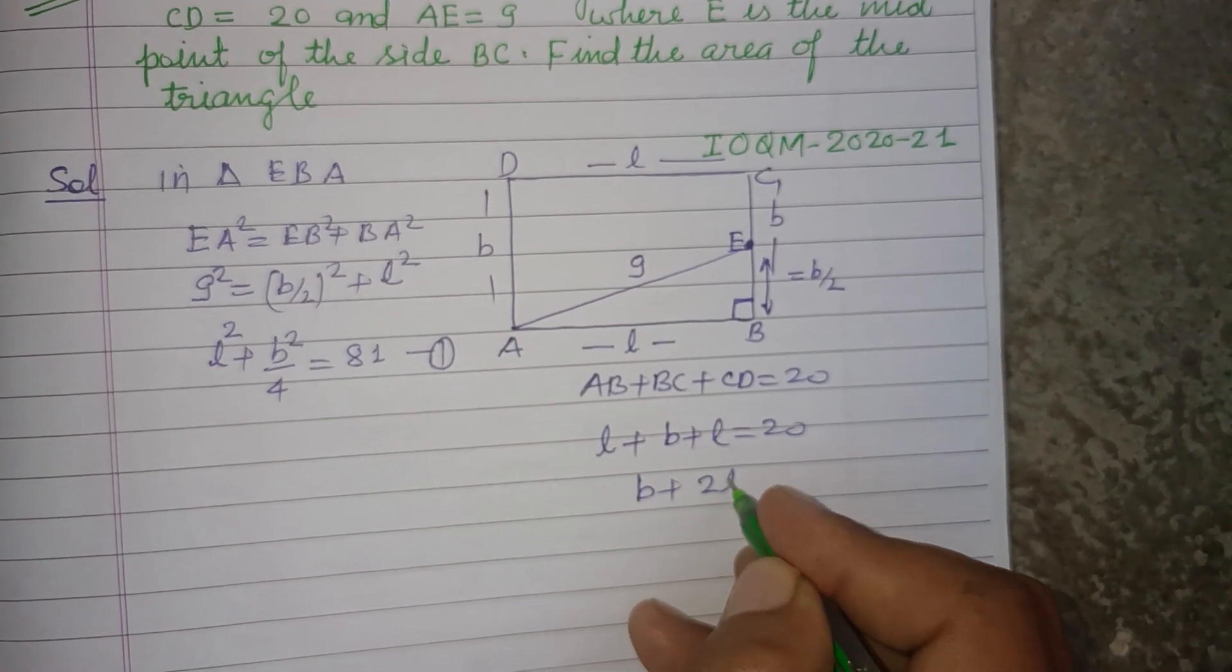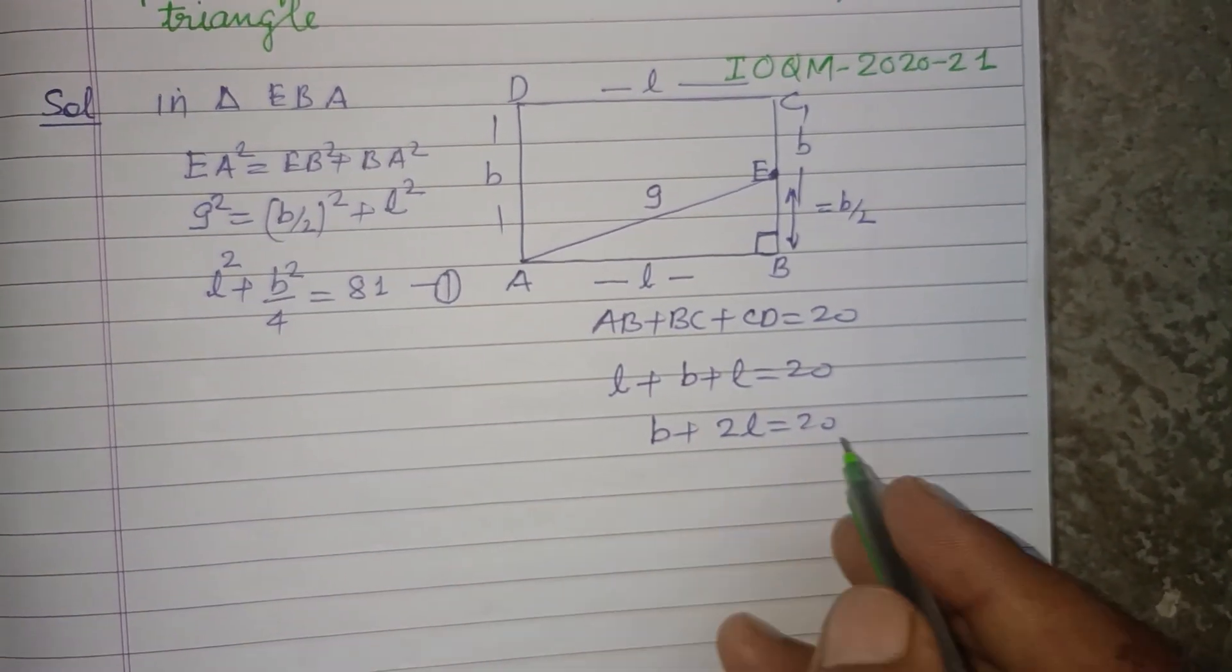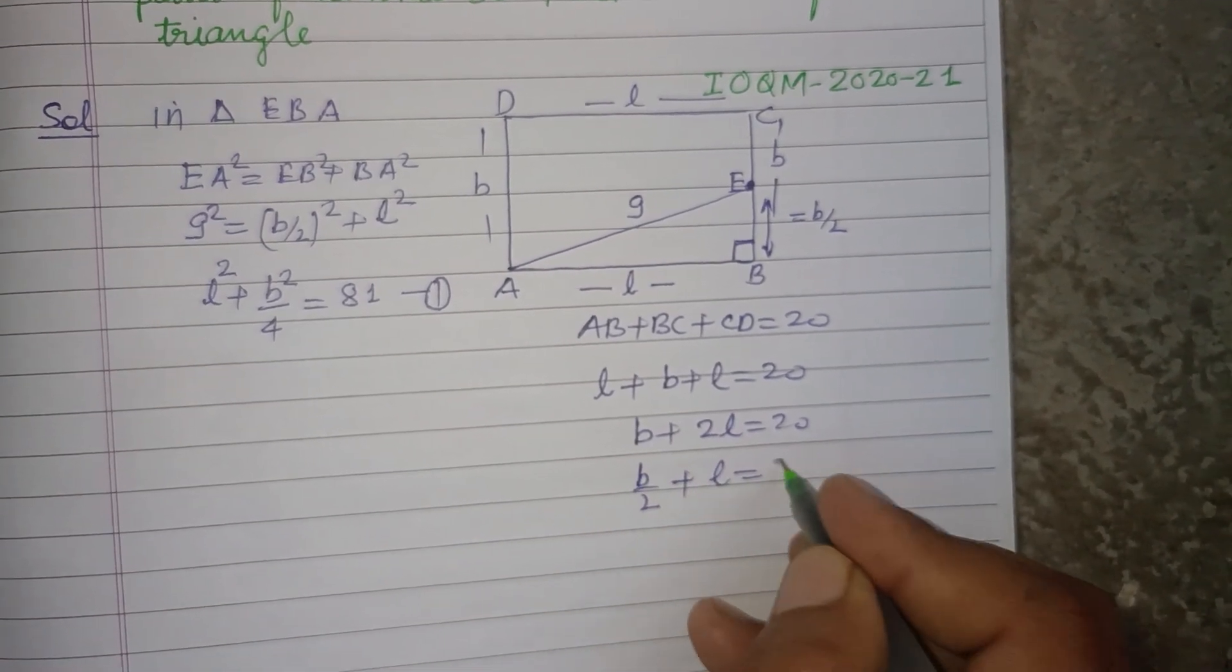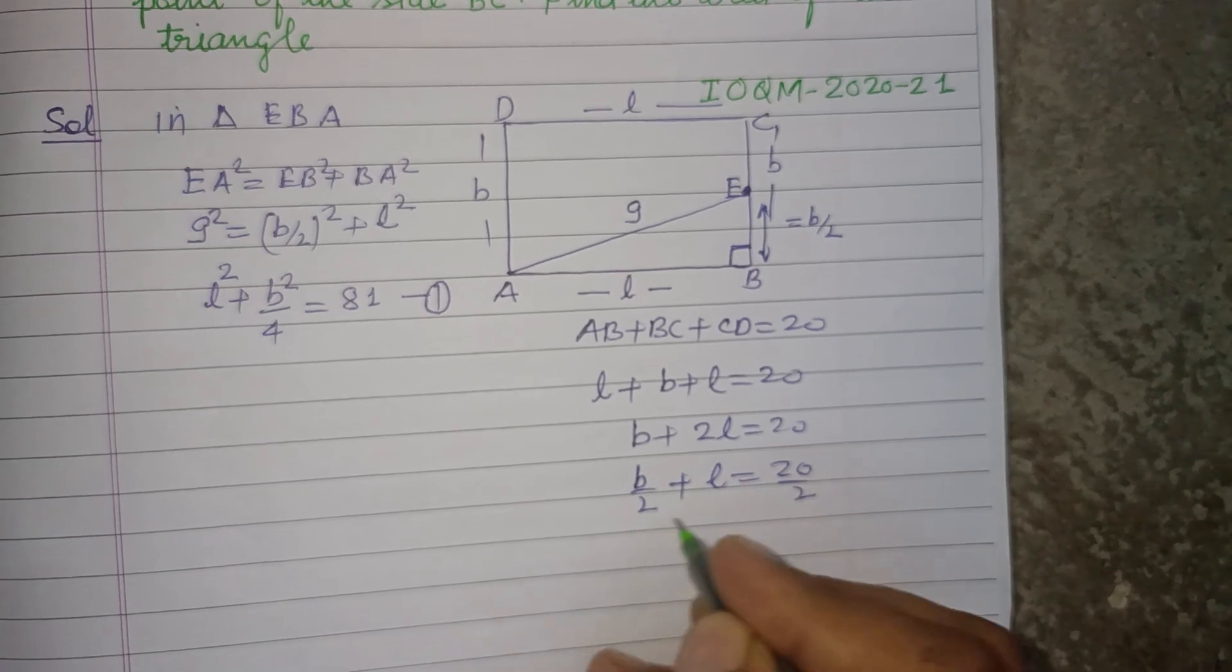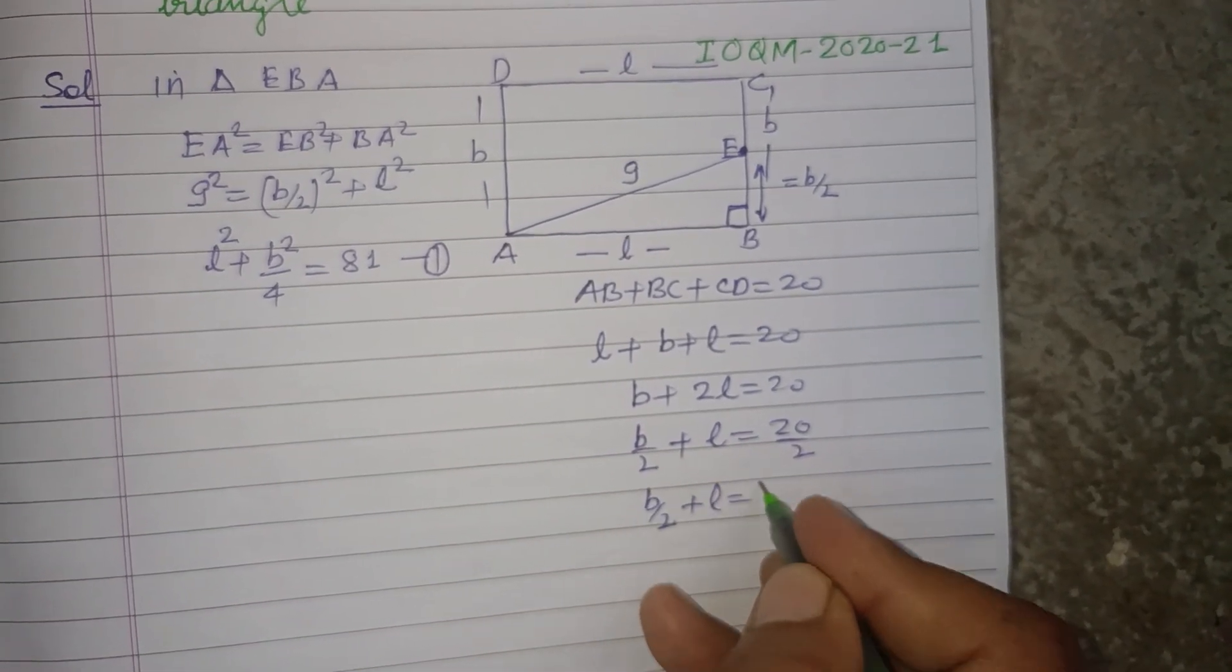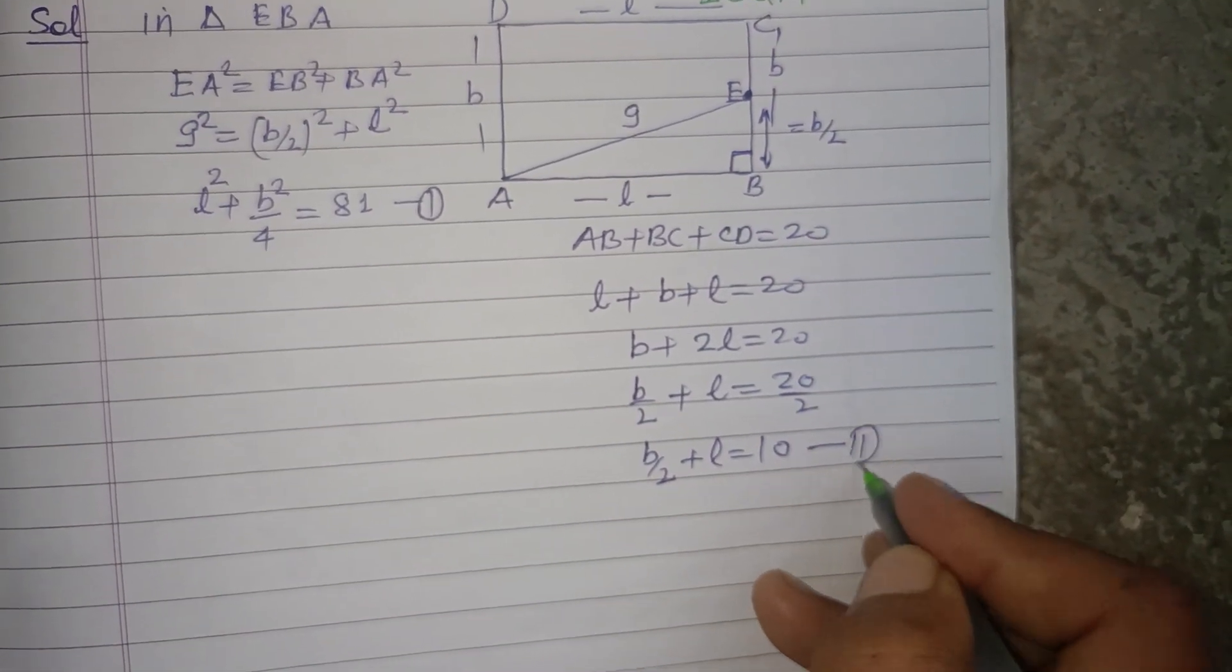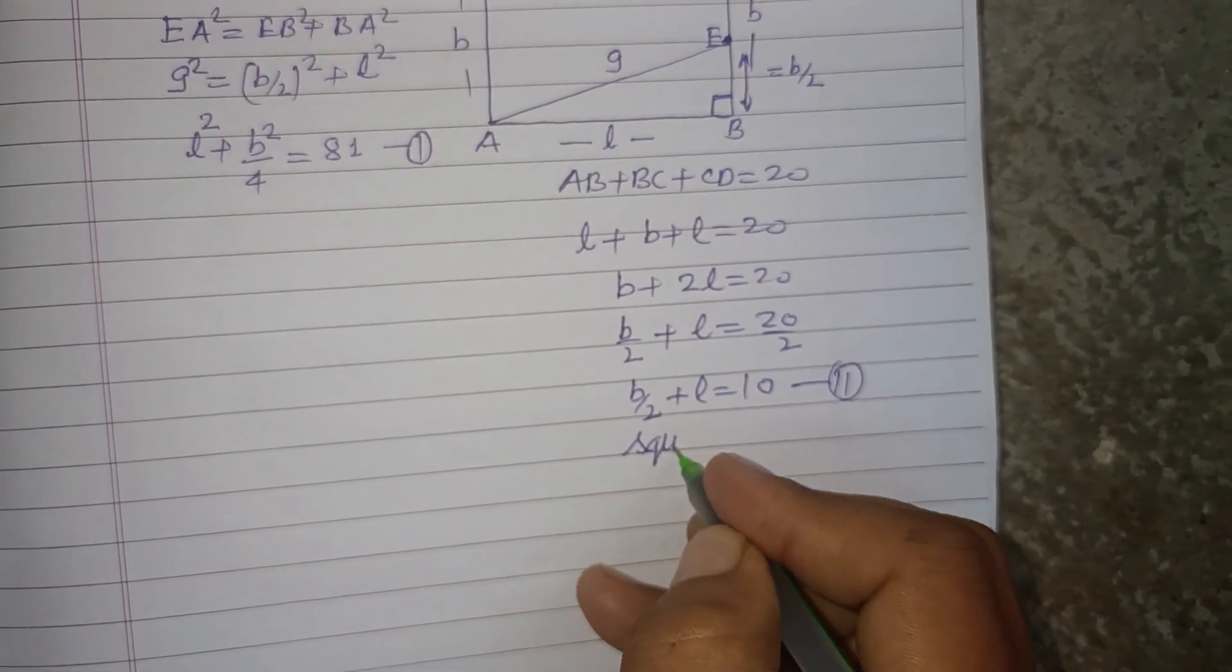So b+2l=20. Dividing by 2, we get b/2+l=10. This is our second equation. Now squaring this equation...